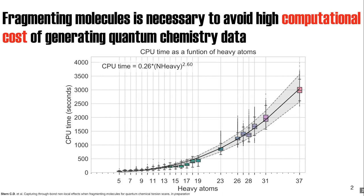Most quantum chemistry methods, such as Hartree-Fock and DFT, scale poorly with molecular size. What I'm showing here is data from QC Archive. On the x-axis you see the heavy atom count; on the y-axis, the CPU time for one gradient optimization. As you can see, it scales poorly with molecular size.